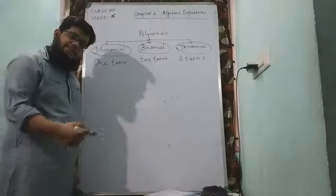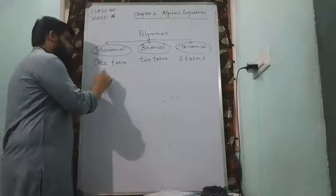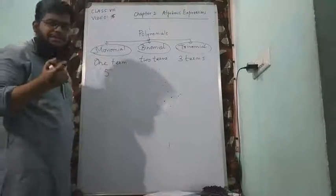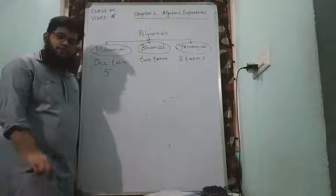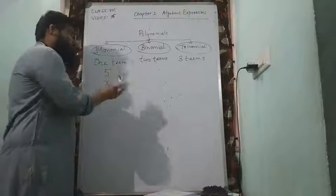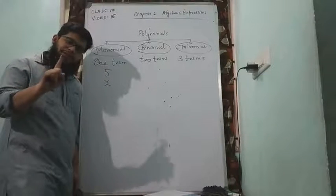So let us discuss some examples before we move on to the problems. One term, like 5. 5 is one single term, so 5 is an example of monomial. Or any letter x. x is also a variable and it's only one term.